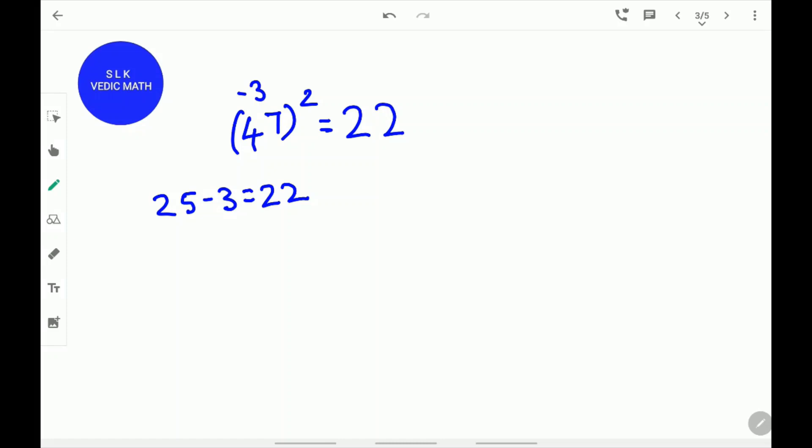Now, we need to find the last two digits. Next, find the square of 3. 3 square is 9. Write 9 as 09 since there is supposed to be 2 digits. So, the answer for 47 square is 2209.